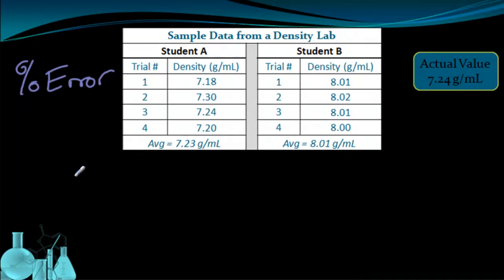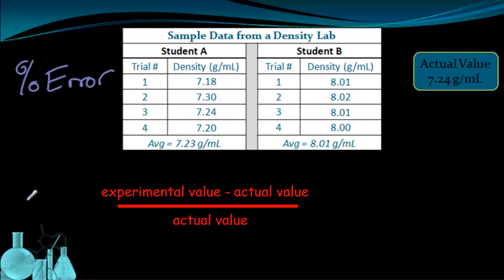Percent error is a way to represent the degree of error that you have in your results. It follows a very simple formula: percent error is the experimental value minus the actual value, divided by the actual value, and all multiplied by 100. The multiplying by 100 makes it into a percent. And this part of the formula is where you plug in your information, which we're going to go ahead and do for this set of data.